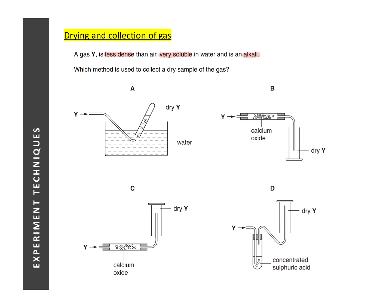The next question involves drying and collection of gases. In order to know which method to use to collect a gas, we need to look at whether it's soluble in water, whether it's denser or less dense than air. To select the correct drying agent, we need to look at the character of the gas, whether it's acidic or basic.